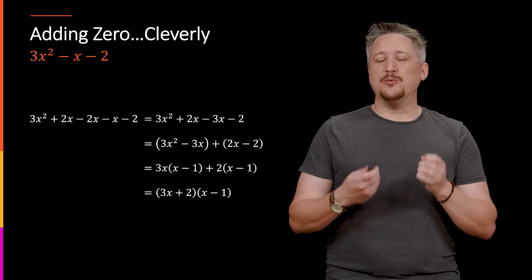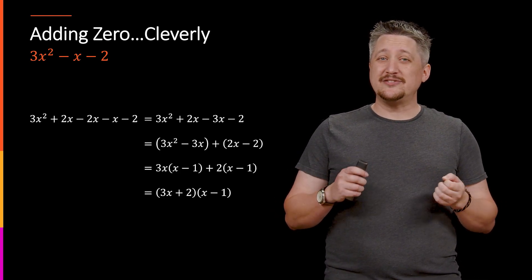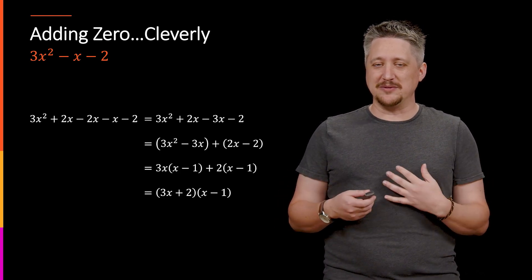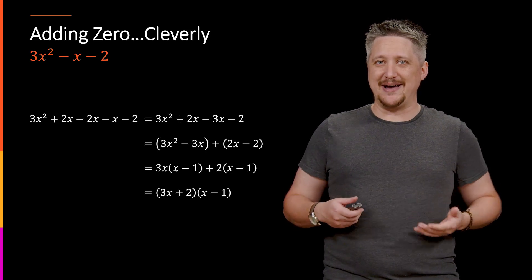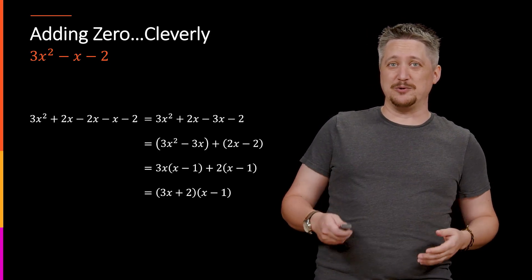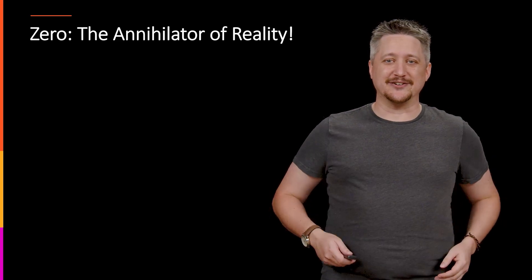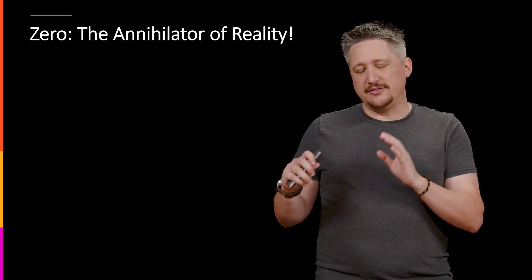Now, next up, there's one other thing that is important about 0 and has arguably, in my opinion, one of the cooler mathematical names. This is the actual thing we call it in mathematics, which is 0 is the annihilator of reality. That part's just me.